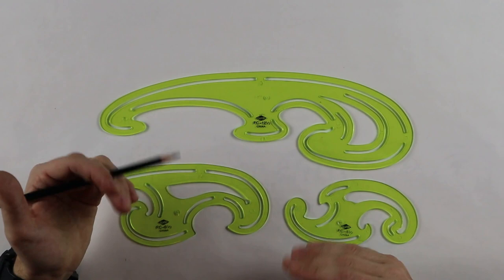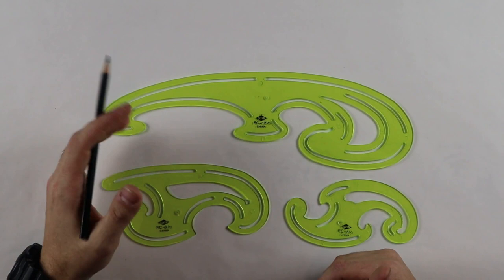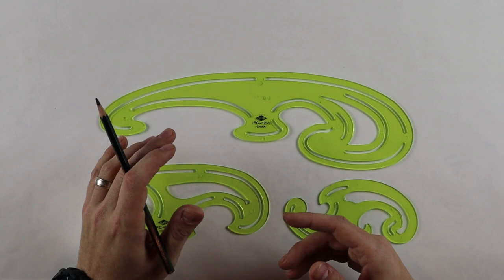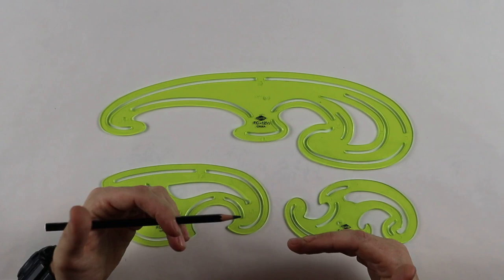Some students actually don't really like French curves at all, and so they move to these flexible rulers. I'll show a picture. I don't have one with me today. Flexible rulers are basically rubberized material that you move in order to get the shape that you like, and then you simply just draft over them. I found them to be useful in certain circumstances, but not all the time.